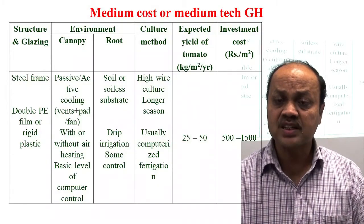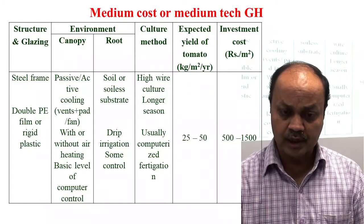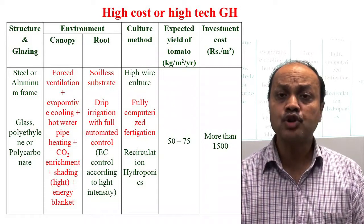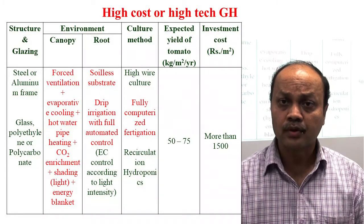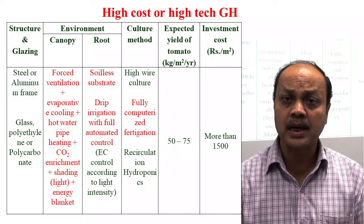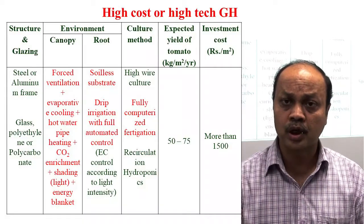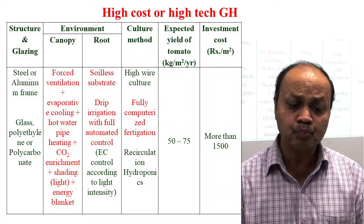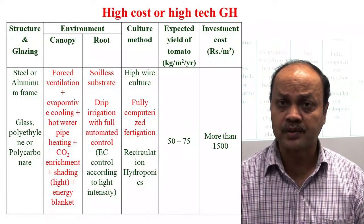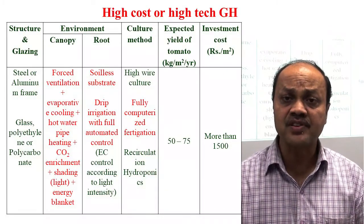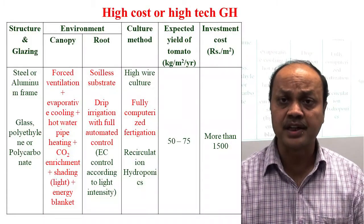The medium-cost greenhouse has a construction cost of 500 to 1500 rupees per square meter. In the high-cost greenhouse, all available technologies are used — both active and passive — for heating and cooling. CO2 enrichment is also used, since CO2 is very important for photosynthesis. Light intensity, duration, and spectrum can also be controlled.